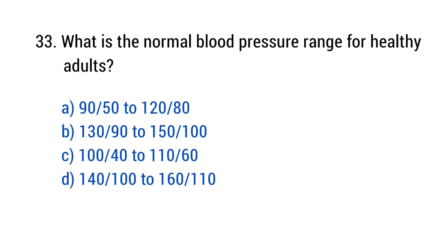Question No. 33. What is the normal blood pressure range for healthy adults? The right answer is Option A: 90/50 to 120/80.